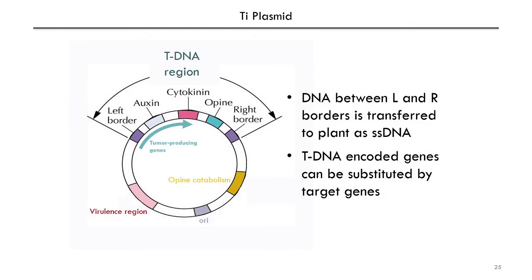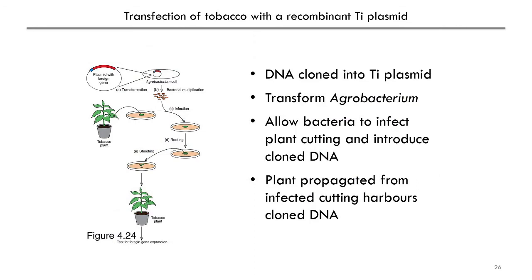We can take advantage of the bacteria introducing DNA into plants. We don't want the plant to produce tumors, so we can replace the tumor-producing genes on the T-DNA with genes that we are interested in. By replacing the genes in the Ti plasmid, we can use the bacteria to introduce genes that we are interested in expressing in plants, and in that way we can make transgenic plants. To do that, you clone your DNA into a Ti plasmid, then transform the bacteria. Then you allow the bacteria to infect a cutting you've taken from a plant and introduce the cloned DNA into plant cells. You can then propagate an individual plant from that cutting. Now you have a transgenic plant that harbors your cloned DNA and can express the protein you want.